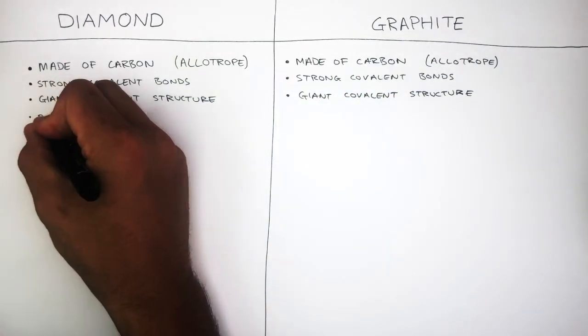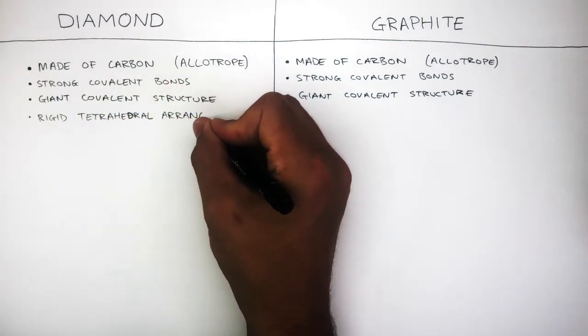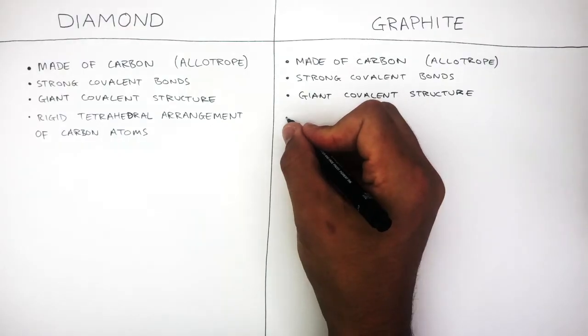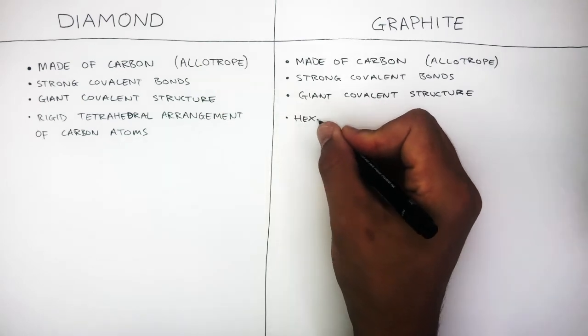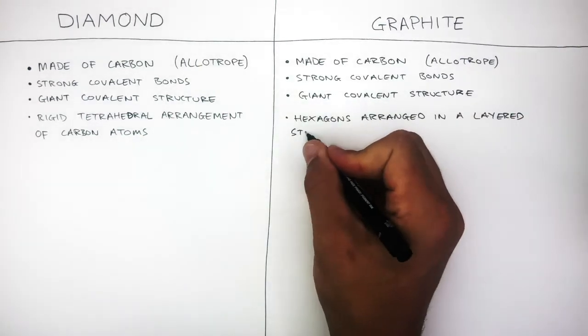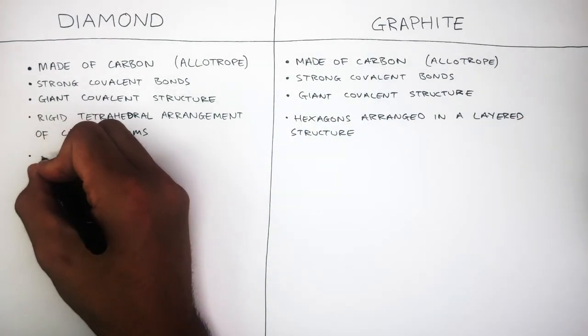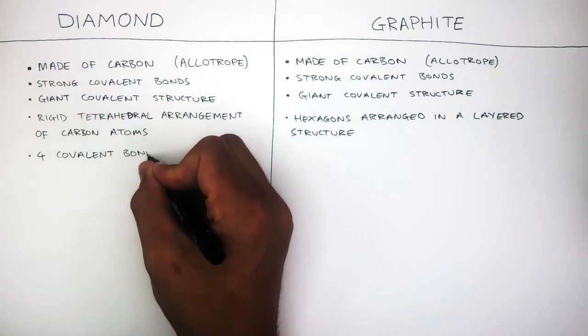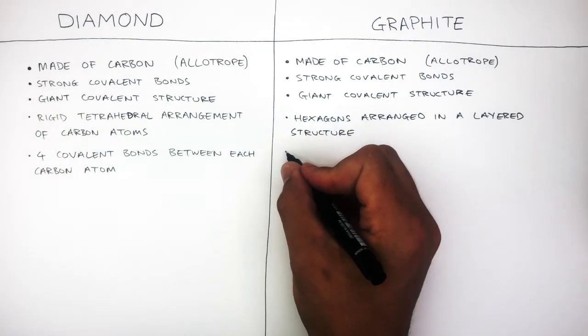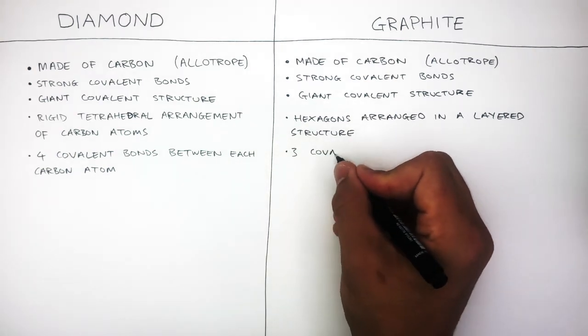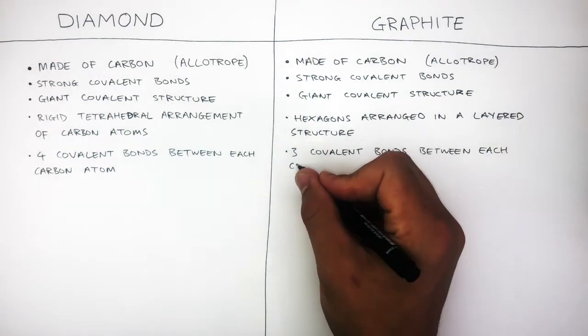Diamond has a rigid tetrahedral arrangement of carbon atoms, whereas in graphite the atoms form hexagons arranged in a layered structure. In diamond there are four covalent bonds between each carbon atom, and in graphite there are three covalent bonds between each carbon atom.